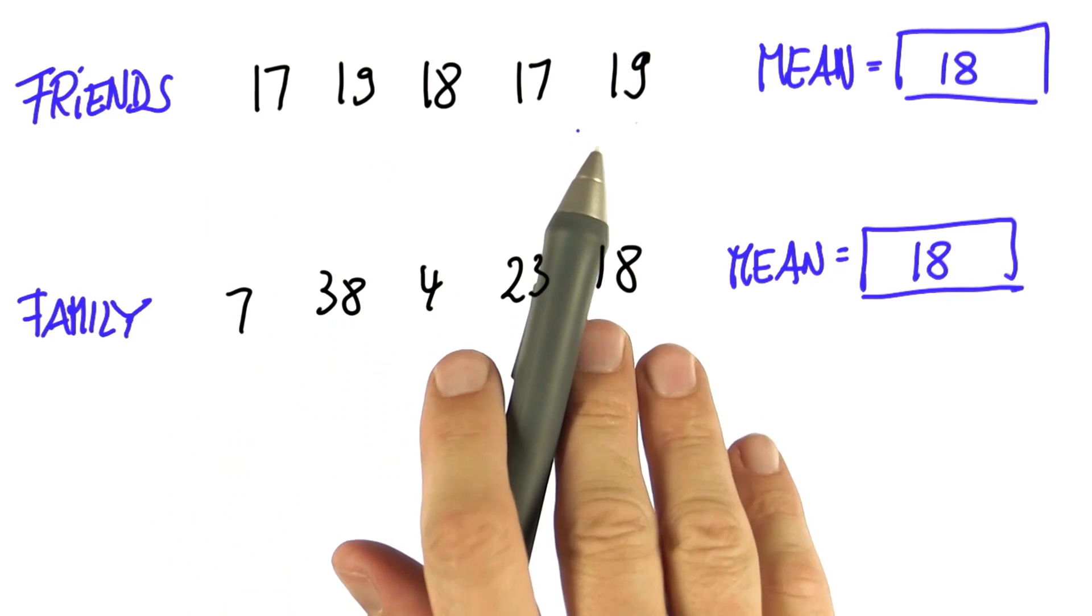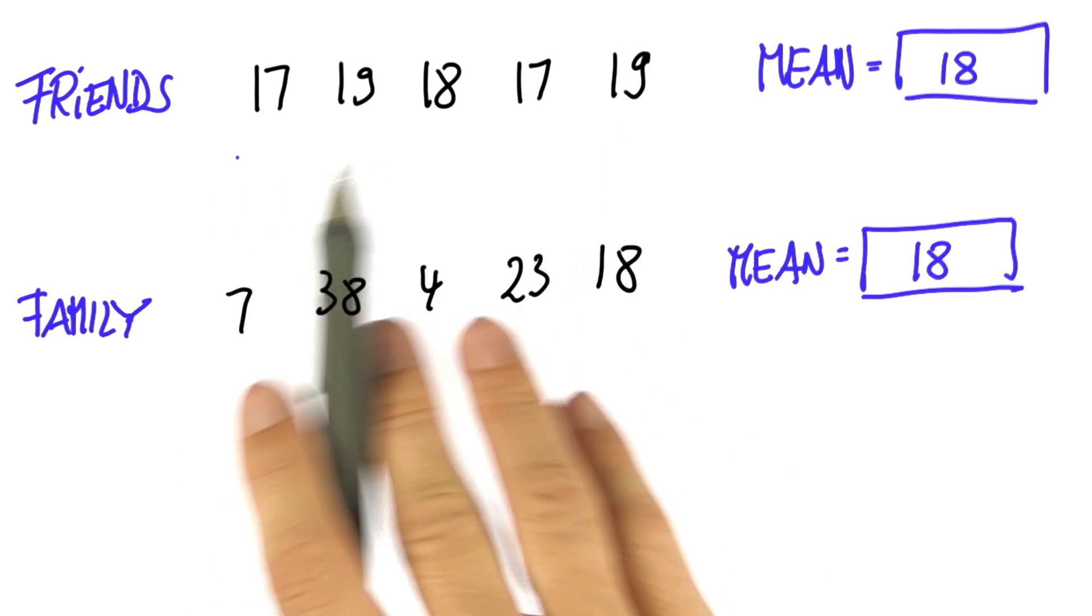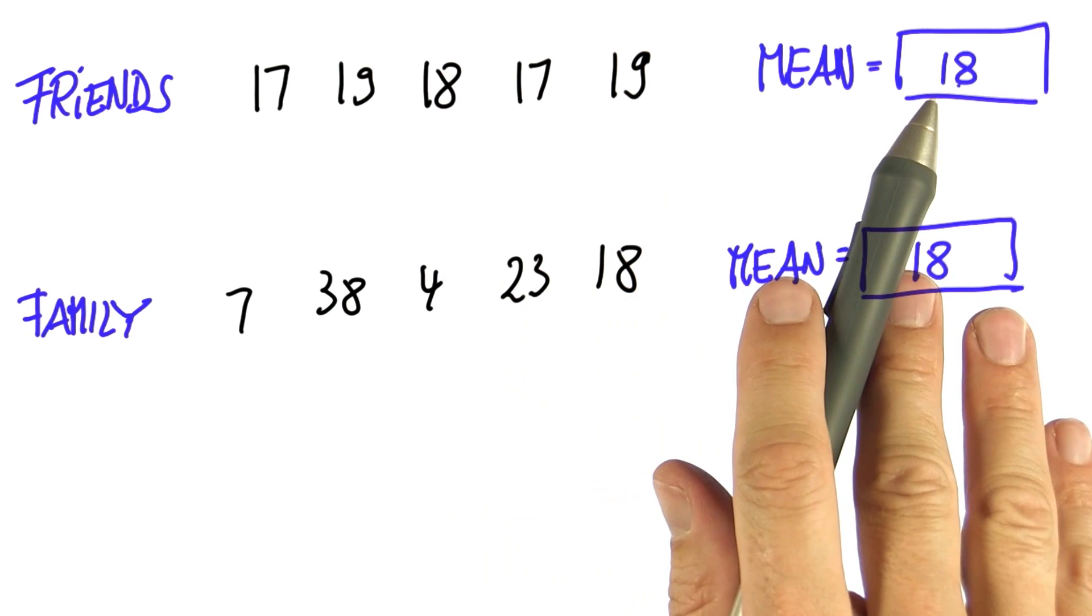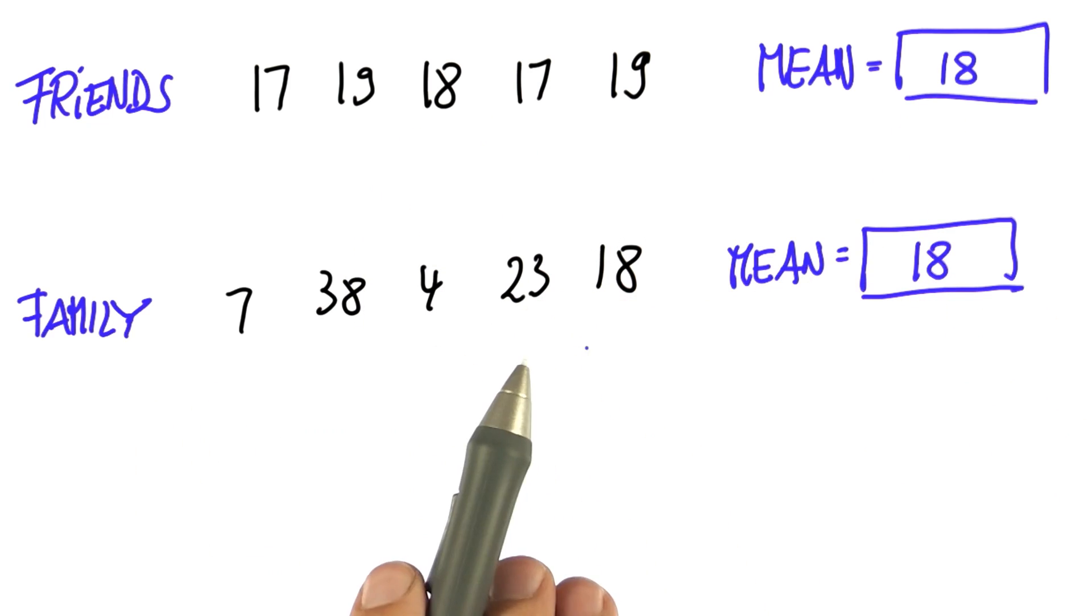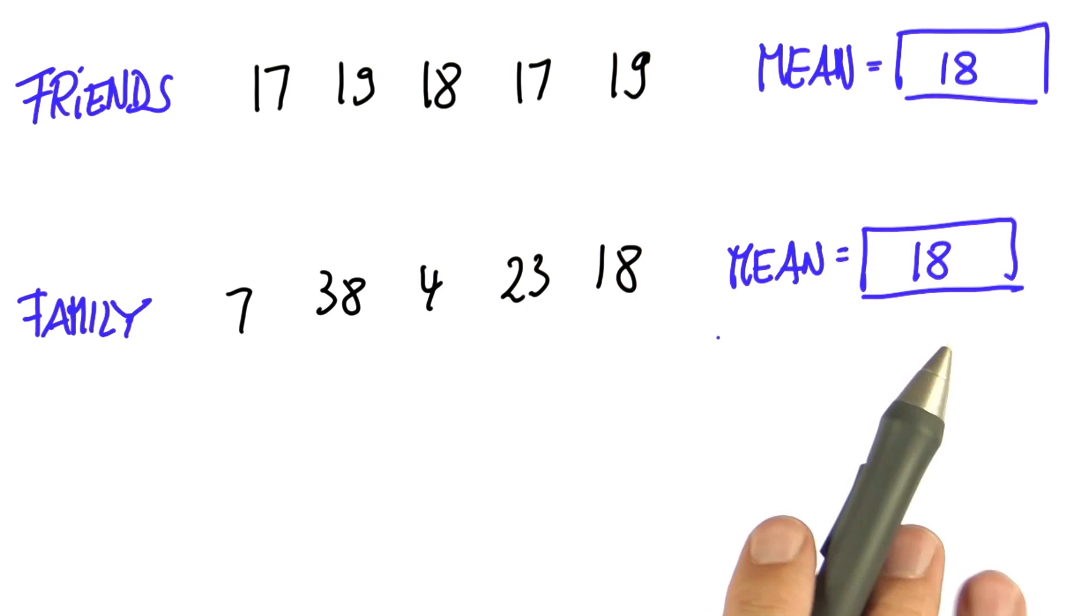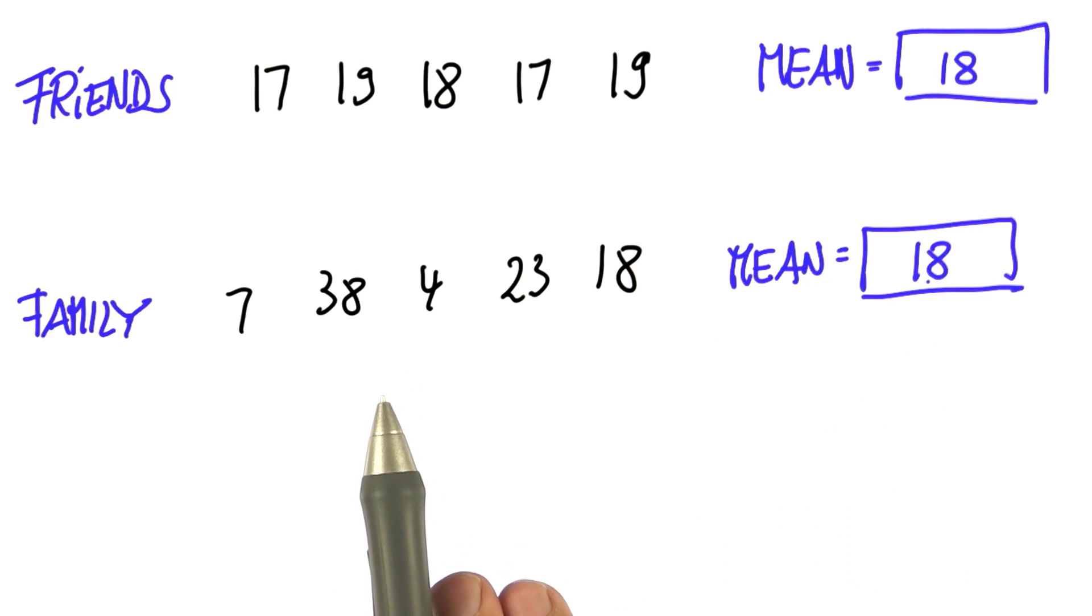There's something really surprising about these age distributions, which is these ones are clustered very close to 18, whereas these are all over the place, really far from 18 in most cases. So can we characterize this somehow?